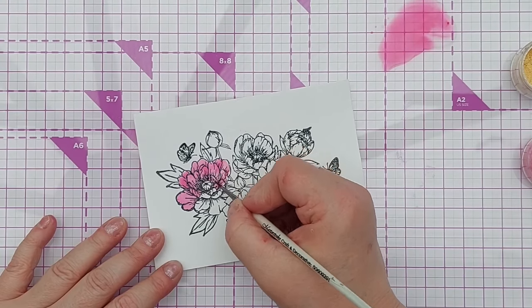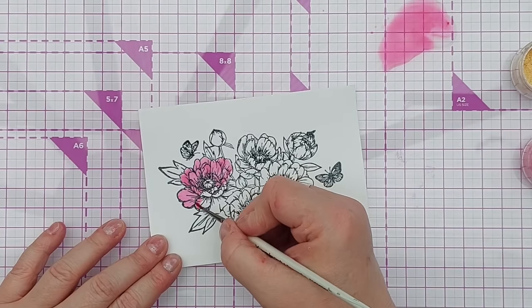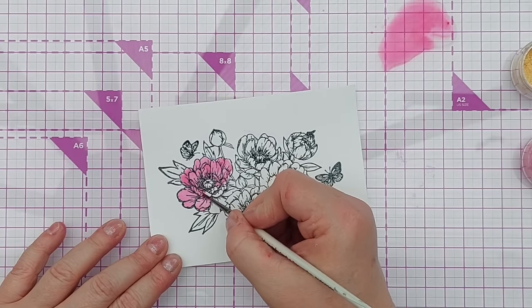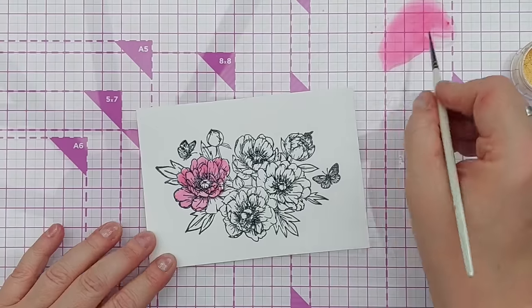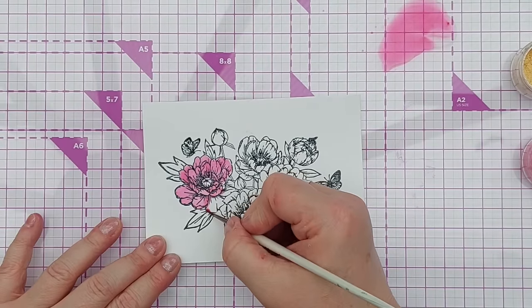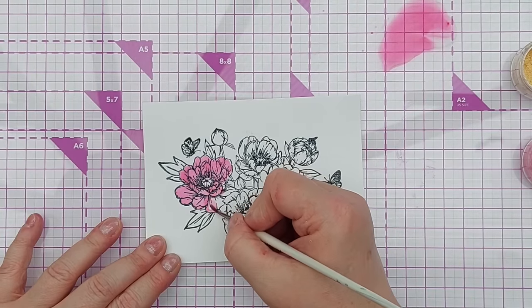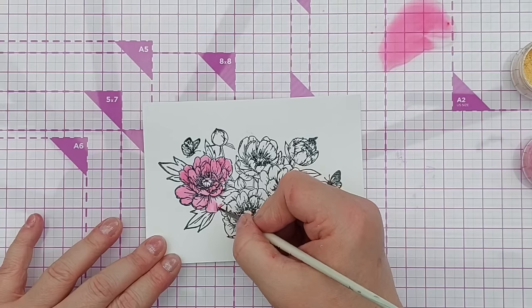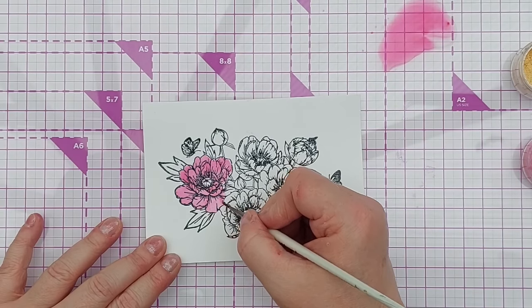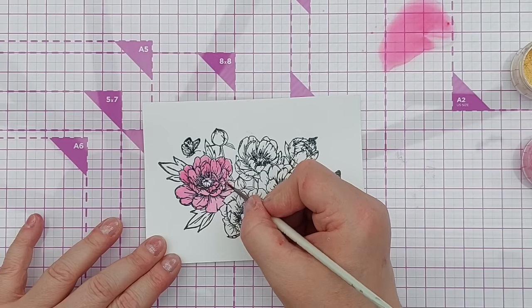So just going to give this flower a nice good coat. And the good thing about heat embossing is it creates a bit of a barrier. It's a physical barrier for the paint, so it helps you keep it contained where you want it to be.